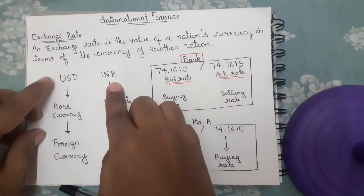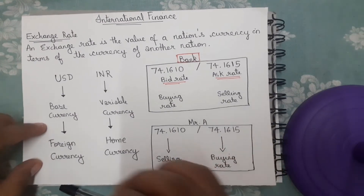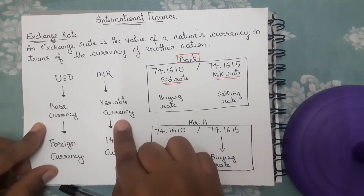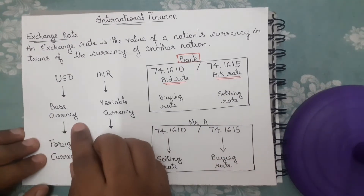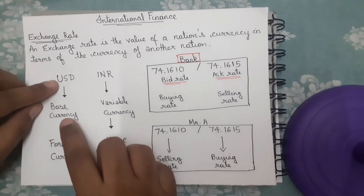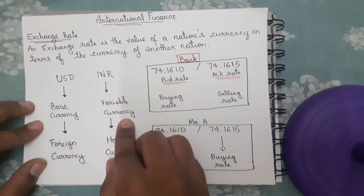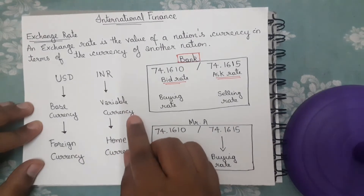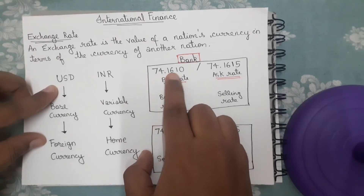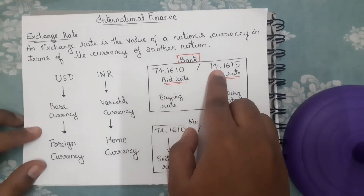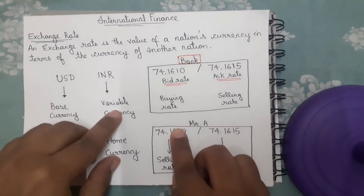For example, the value of the Indian rupee in terms of the US dollar is an exchange rate. According to the modern convention, we write the base currency first, then the variable currency, then the bid rate and ask rate. Here, the US dollar is the base currency, so one US dollar equals 74.1610 rupee at bid rate and 74.1615 rupee at ask rate.